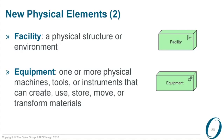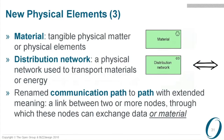For facility, you can see the symbol — it looks like a factory, but any kind of facility qualifies: a laboratory, or as discussed in the ArchiMate forum, if you're a mushroom grower, the grotto in which you grow the mushrooms could be a facility as well. Then we have 'material' — tangible physical matter or physical elements. Anything you create or build with physical matter is modeled as material; it can also include things like fuel.